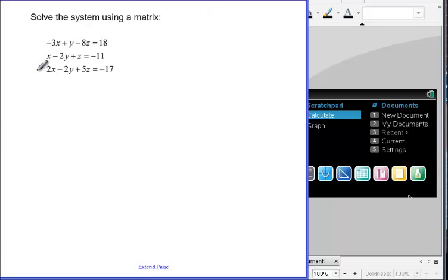To do that, we just take the leading coefficients of each equation. So on this first equation, we're going to take the 3 and the -3, the 1, and the -8. So -3, 1, -8. And then we take what it equals and put it over here.